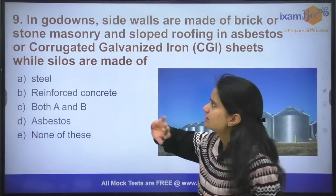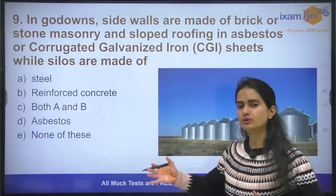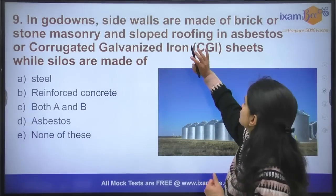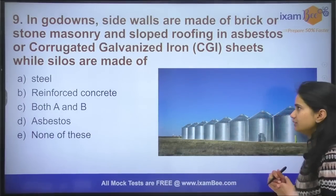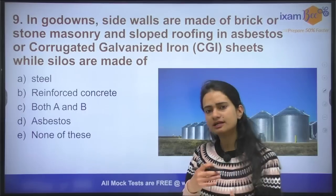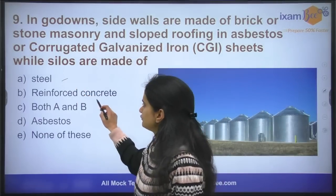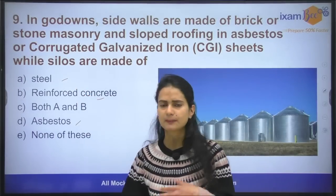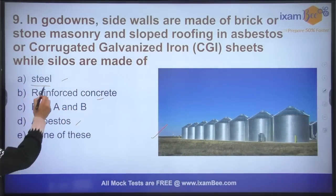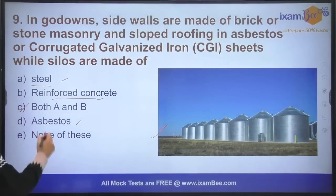Question number nine: what are godowns and silos? FCI and CWC store food in large godowns. The side walls of godowns are made up of stone and masonry. For silos, the structure is made of steel, and the bottom portion is made up of concrete. So both steel and reinforced concrete — options A and B — are the right answer.